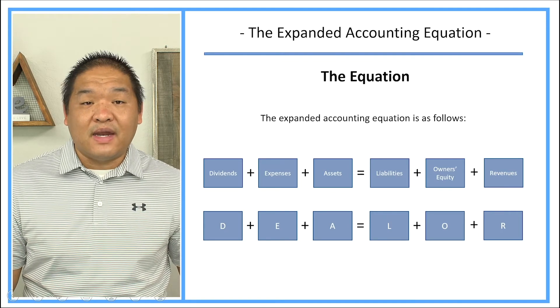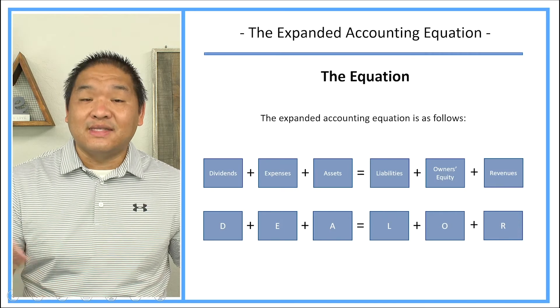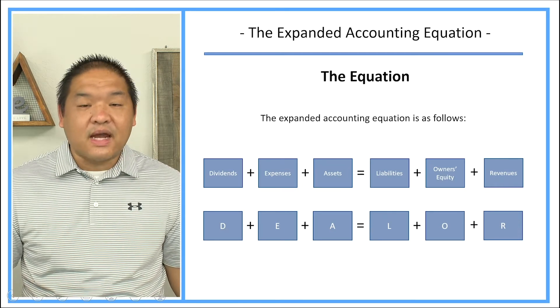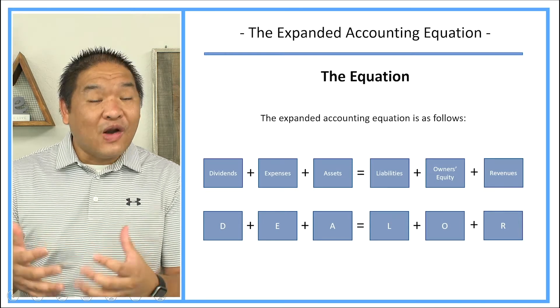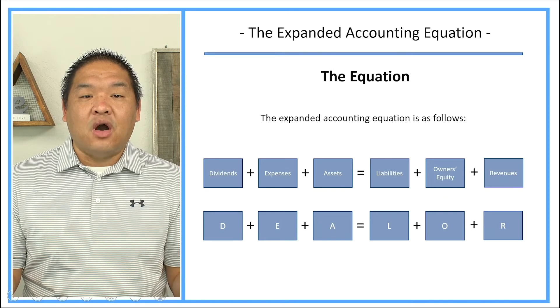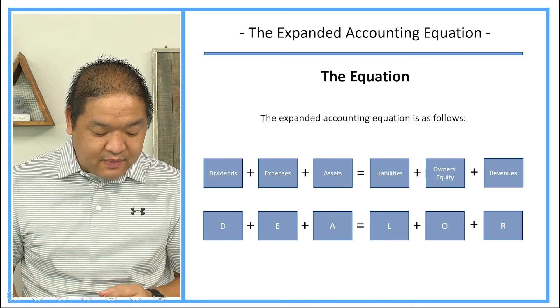Again, our expanded accounting equation has dividends plus expenses plus assets equals liabilities plus owner's equity plus revenues. Those are our six buckets that we basically categorize all of our economic events into. And this is going to help us understand the debits and credits.